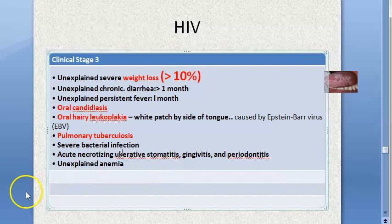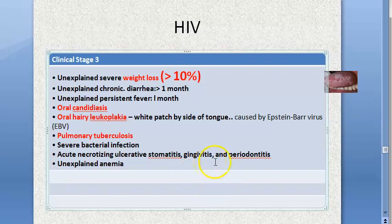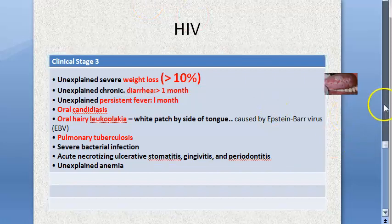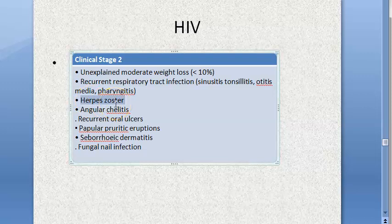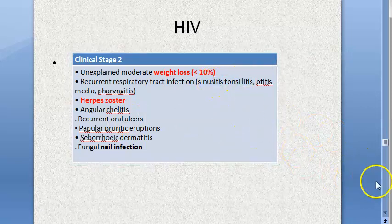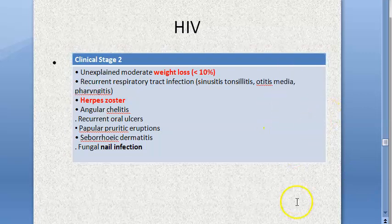Stage 3 also includes acute necrotizing ulcerative stomatitis, gingivitis, and periodontitis; unexplained anemia; chronic diarrhea greater than one month; and persistent fever greater than one month. To summarize distinctions: herpes zoster is Stage 2; weight loss less than 10% is Stage 2; nail infection is Stage 2; sinusitis, tonsillitis, pharyngitis, and otitis media are Stage 2.